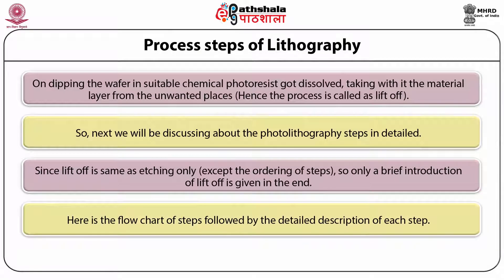Let us see the flowchart of steps followed by the detailed description of each step. The schematic for the photolithography process is shown in the figure. The steps are: cleaning of substrate, spin coating of photoresist, pre-bake, UV exposure, development, post-bake, etching, and finally stripping.